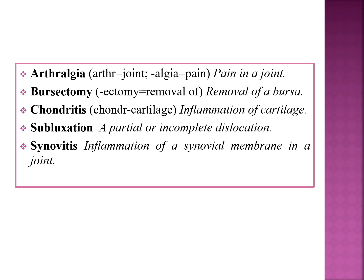Next is subluxation. Subluxation is a partial or incomplete dislocation. Next is synovitis: itis means inflammation, so synovitis means inflammation of the synovial membrane in a joint. These are some examples of terms.